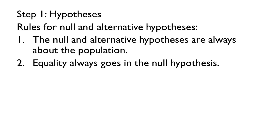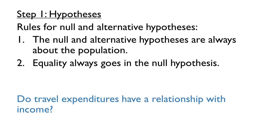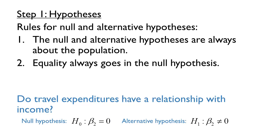Second, equality always goes in the null hypothesis. Recalling our question, there is a yes or no answer: either travel expenditures do have a relationship with income, or they do not. If there is a relationship, beta 2 is not equal to 0. If there is no relationship, beta 2 equals 0. To satisfy this rule, we should make the latter the null hypothesis and the former the alternative hypothesis. We will denote these as H0 and H1, respectively.